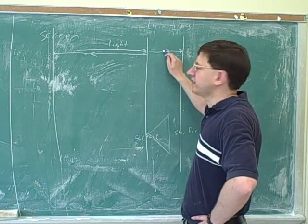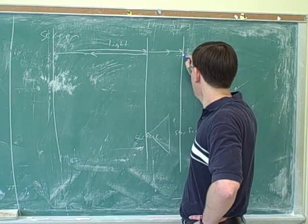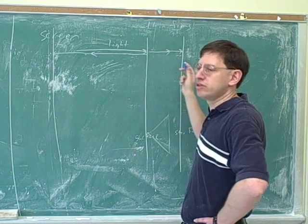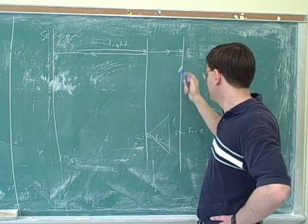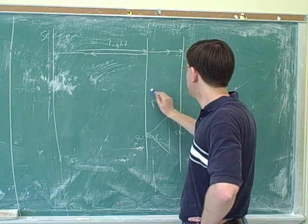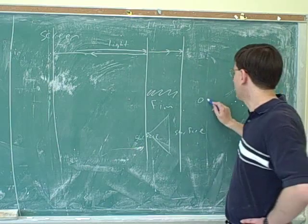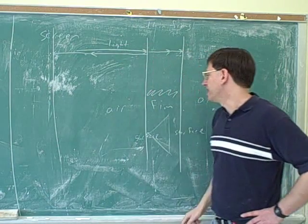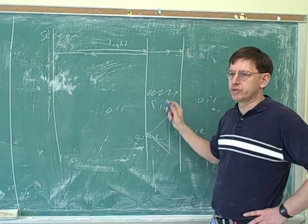What about the light that got transmitted? Well, some of that will be reflected by the other surface of the film. A film has two surfaces — there's one surface of the film and here's the other surface. So this region right here is the filmy stuff itself. So here we might have air, and here we might have air, and here we might have a film of oil or water or whatever.